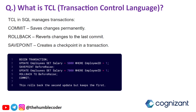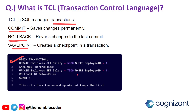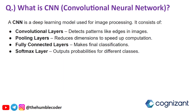The next question is TCL — Transaction Control Language — in SQL. Transactions have different types: commit saves the changes permanently, rollback reverts the changes to the last commit, and savepoint creates a checkpoint in a transaction. For example: BEGIN TRANSACTION; UPDATE employees SET salary = 5000 WHERE employee_id = 1; SAVEPOINT before_raise; UPDATE employees SET salary = 7000 WHERE employee_id = 1; ROLLBACK TO before_raise; COMMIT. This rolls back the second update but keeps the first update.